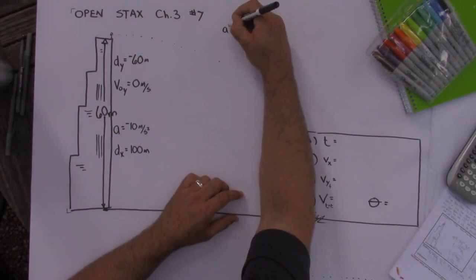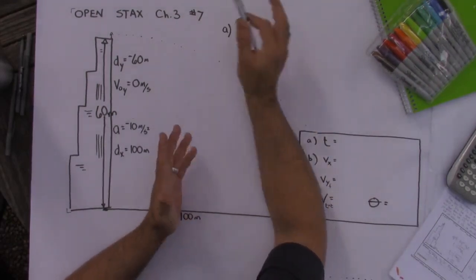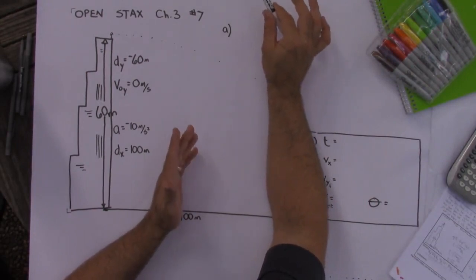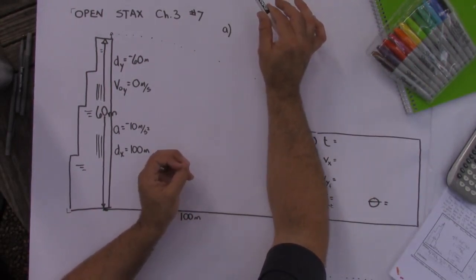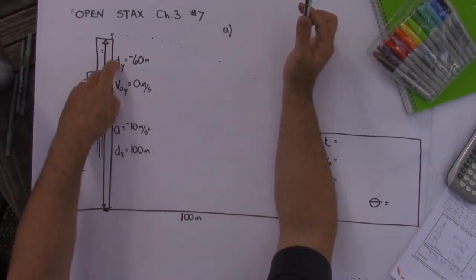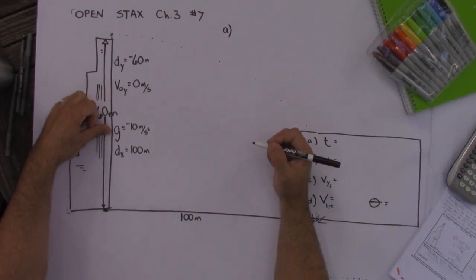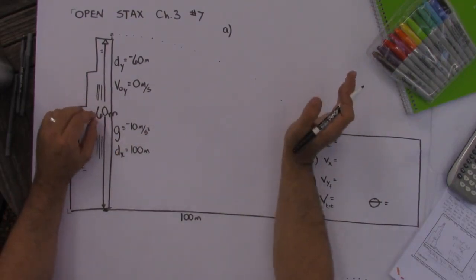Alright so here's what I would do. For part a if I had to find out how much time it was in the air, first thing I have to do I draw a little diagram to sort out what happens in the x direction, what happens in the y direction. Then I look at all my formulas and I think, well I'm trying to find time. And I know the displacement in the y direction and the acceleration in the y direction. That's just another way of saying gravity.